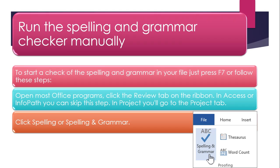In most Office programs, click the Review tab on the ribbon. In SharePoint or InfoPath, you can skip this step. In Project, you will go to the Project tab. Click Spelling or Spelling and Grammar.